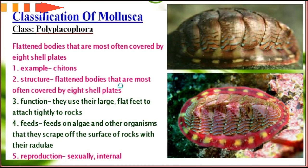First, we will discuss Class Polyplacophora. They have a flat body most often covered by eight shell plates. An example is chitons. Their structure features a flat body covered by eight shell plates. They use their large flat feet to attach tightly to rocks, and feed on algae and other organisms that they scrape off the surface of rocks with their radula. Reproduction is mostly sexual and internal. You can see two representative members of this class here.